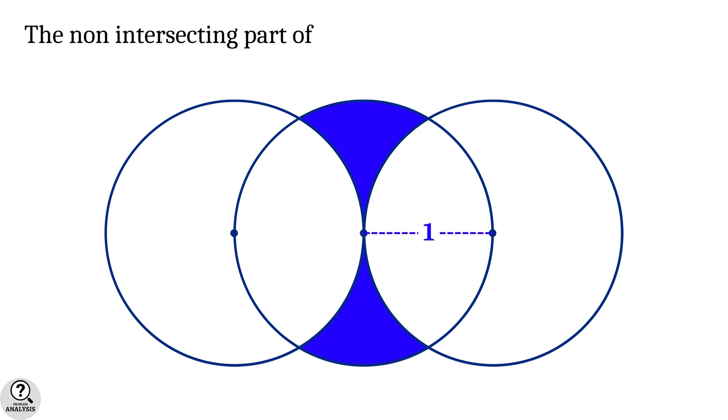Now the non-intersecting part of the middle circle is shaded with blue color. Then my problem is, what is the area of this blue shaded region?